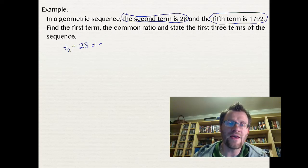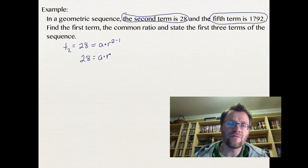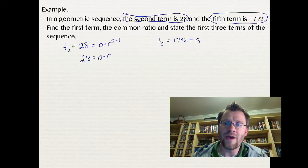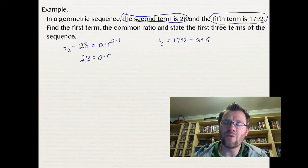So our second term happens to be 28, and that is A, which we don't know yet, and we don't know R, but we do know that it's the second term. So that leaves us with 28 equals A times just R. Our other equation would be with our fifth term. We know that is 1792, and that would equal A again times R, which we don't know either one of those, but we know it's the fifth term, so that would be 5 minus 1. So we're left with 1792 equals A times R to the fourth power.